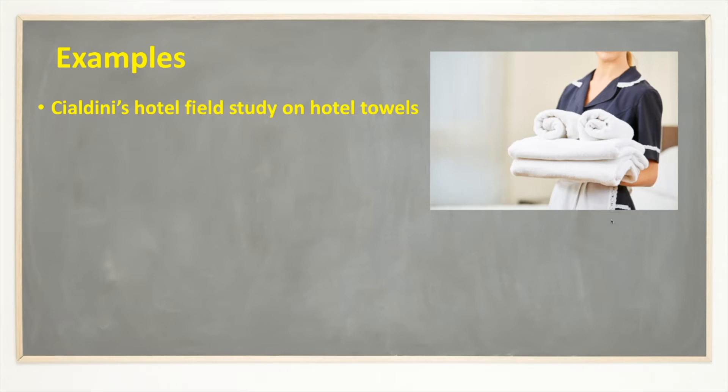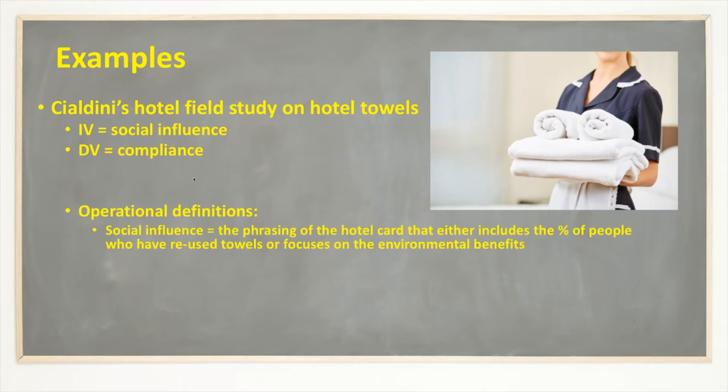So Cialdini's hotel field study on hotel towels, we've got this in the textbook, the independent variable is social influence. They're going to manipulate social influence to try to see if it has an effect on compliance. Now, again, these are pretty broad terms. So the operational definition would be the phrasing of the hotel card that either includes the percentage of people who have reused towels or focuses on the environmental benefits.